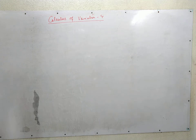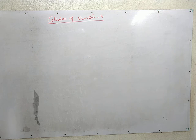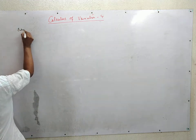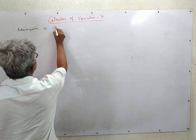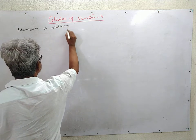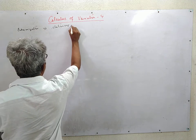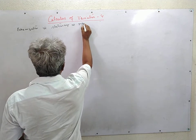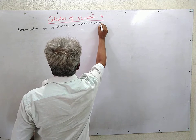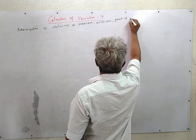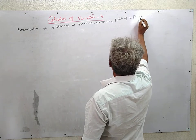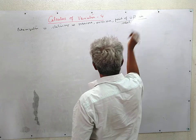In the next class we shall consider the optimization of a function subjected to restriction, and we shall introduce Lagrange's method of undetermined multipliers. Extremization means finding stationary values, which includes maxima, minima, and point of inflection — that is, maxima, minima, or point of inflection. For one variable this is the inflection point, and for two variables it is a saddle point.